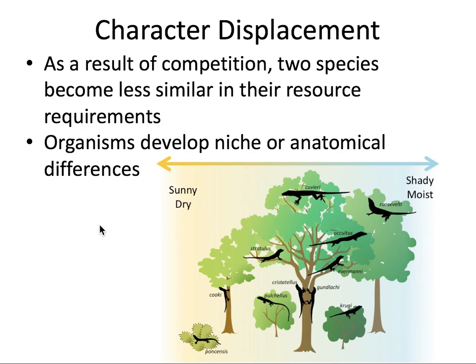Character displacement occurs when two species become less similar in their resource requirements — the organisms actually change. They can develop anatomical differences through evolution and also evolve to have different niches. The example here involves lizard species on the island of Puerto Rico, which evolved to become anatomically different from each other to minimize competition. Each lizard species lives in a separate location and separate habitat — some living off cacti, some shrub-living species, some living up in the trees as arboreal varieties. This is known as character displacement.